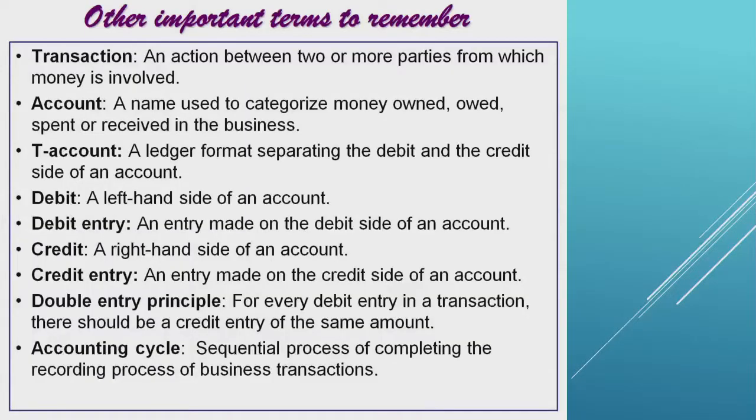The accounting cycle is a sequential process of completing the recording of business transactions. It starts from identifying the transaction, then sorting — for example, a cash transaction is going to be recorded in the cash book — and continues through the full cycle.